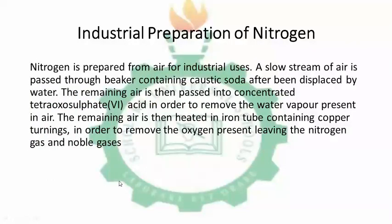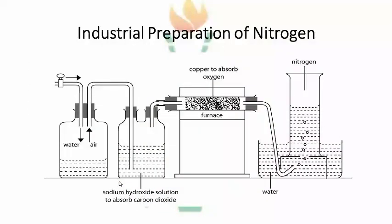Now, to the industrial preparation of nitrogen. Nitrogen is prepared from air for industrial uses. We prepare nitrogen by passing a stream of air through a beaker containing caustic soda to remove the carbon dioxide present in the air mixture. The remaining air mixture is then passed into concentrated sulfuric acid to remove the water vapor present in the air.